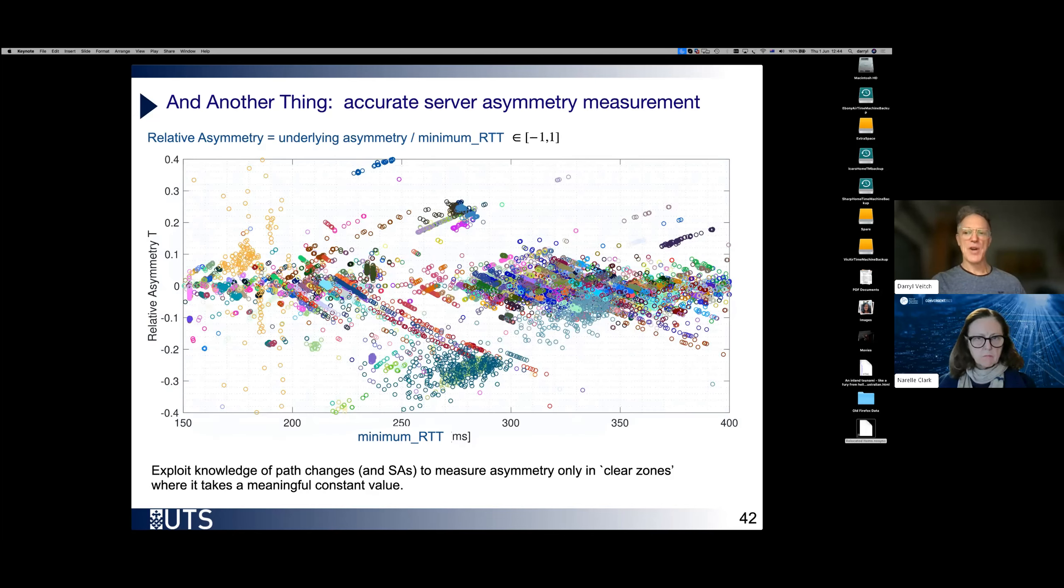Because we are tracking path conditions. And I think this is really exciting because pretty much no one else has ever done this. Because we are actually bothering to track those changes in path, we are in a position to be able to detect periods of time where there are no changes in the path. And then within those periods of time, the minimum RTT and the underlying asymmetry are meaningful. They exist, can be measured, and we have the means to measure it in this experiment. And therefore we can plot actual values, reliable values of asymmetry.